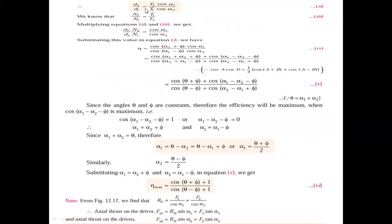By equating the diameter values, you get the speed ratio as N2 by N1 equals T1 by T2. Putting these values in the efficiency equation gives D2 N2 upon D1 N1 equals cos(alpha 1) upon cos(alpha 2). Substituting into the efficiency expression, instead of D2 N2 insert cos(alpha 1) and instead of D1 N1 insert cos(alpha 2). Using the identity cos(A+B) and the trigonometric product-to-sum formula: cos A cos B equals one-half times [cos(A+B) plus cos(A-B)].